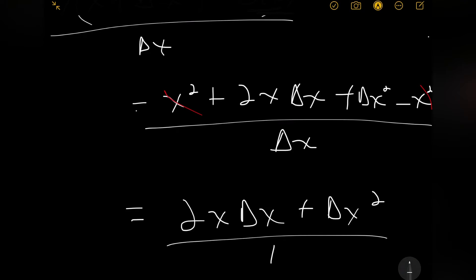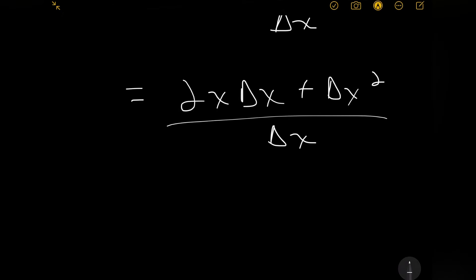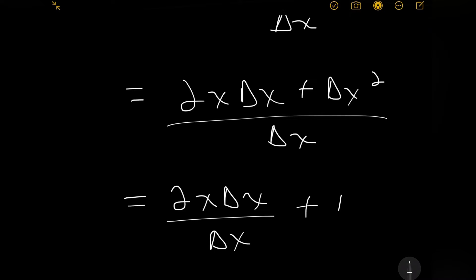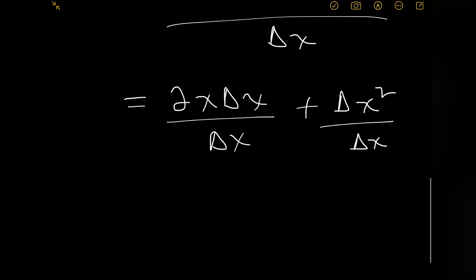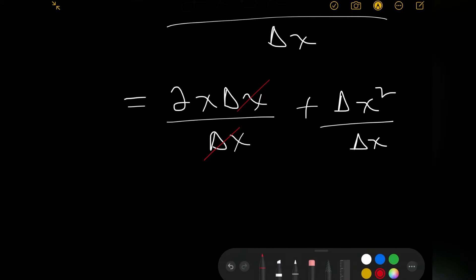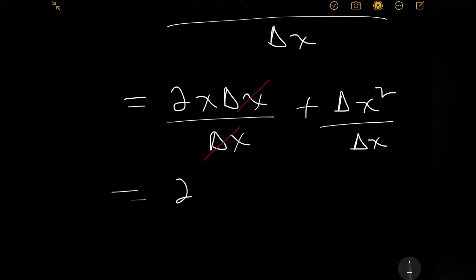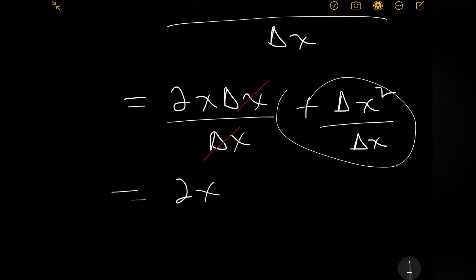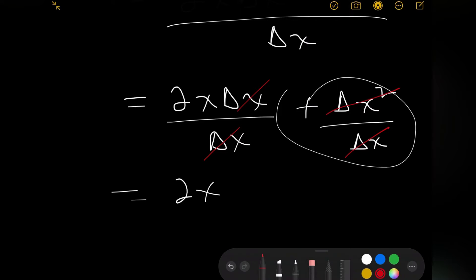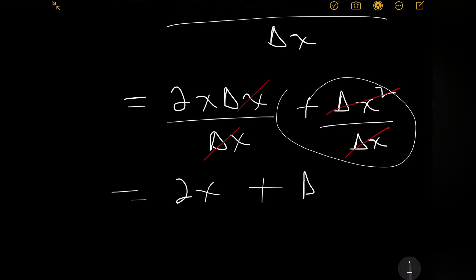We divide this by delta x. We can write this as two separate fractions: 2x delta x over delta x, plus delta x squared over delta x. The delta x terms cancel on the left, leaving 2x. On the right, one delta x cancels, leaving plus delta x.